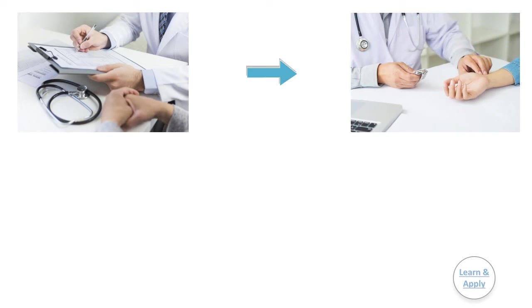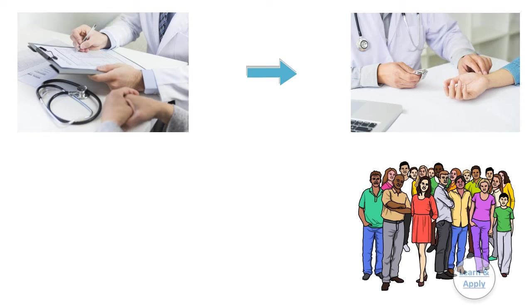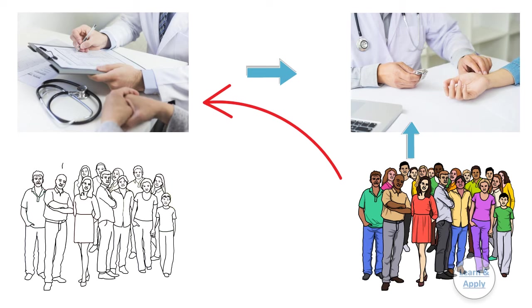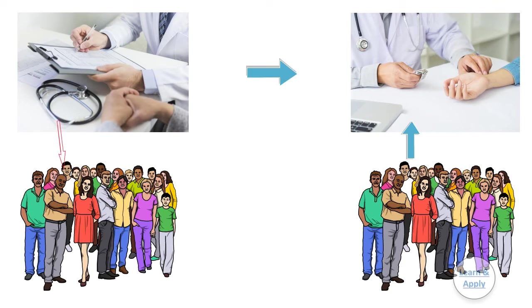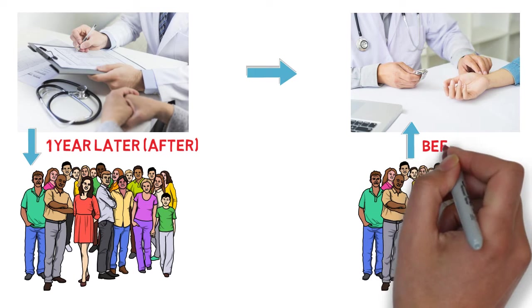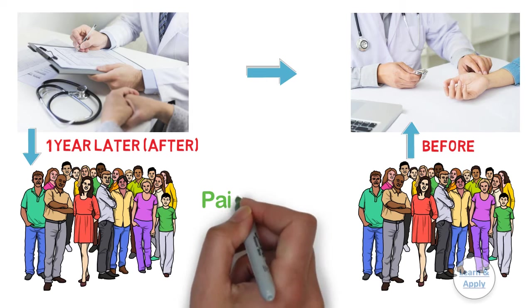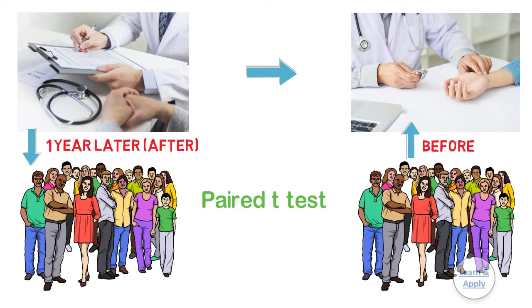For example, a physiologist wants to determine whether a particular running program has an effect on resting heart rate. For this purpose, the heart rates of 20 randomly selected people were measured. The people were then put on the running program and measured again one year later. Thus, the before and after measurements for each person are a pair of observations. The physiologist then performs a paired t-test to determine whether the heart rates are different before and after the running program.